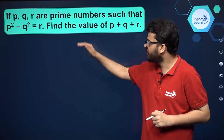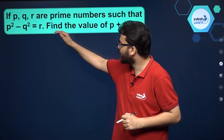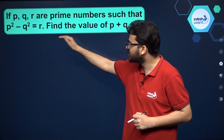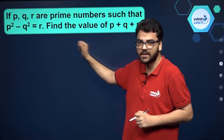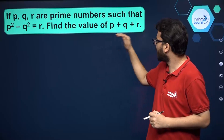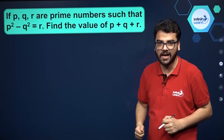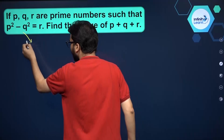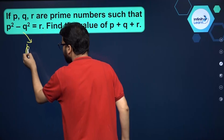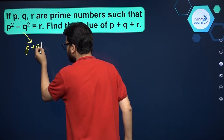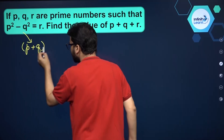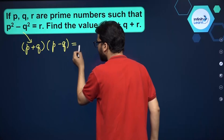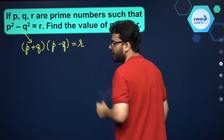So here we have got a question in which p, q and r are prime numbers and it is given that p squared minus q squared is equal to r, and we have to find the value of p plus q plus r. The very first thing we can do is write it as p plus q into p minus q using the algebraic identity, and that is given to be equal to r.